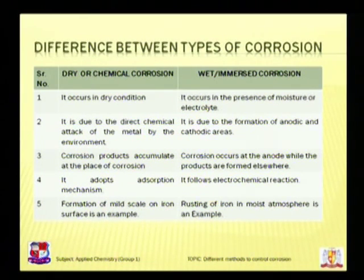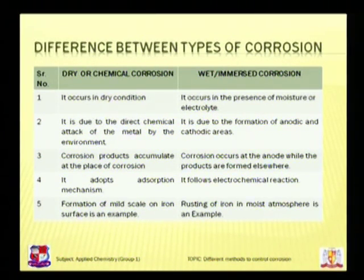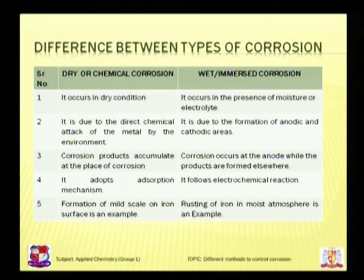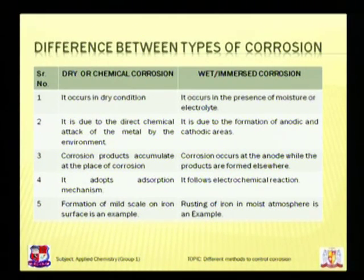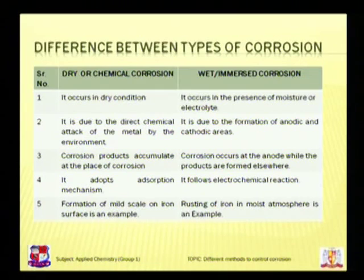We have seen different types of corrosion: one was dry or chemical corrosion and another was wet and immersed corrosion. Dry corrosion occurs in dry conditions, that is in the absence of moisture, whereas wet corrosion occurs in the presence of moisture or any electrolyte medium. Dry corrosion is due to the direct chemical attack of metal by the environment, whereas wet corrosion is due to the formation of anodic and cathodic areas. In dry corrosion, the product accumulates at the place of corrosion and follows an adsorption mechanism, whereas wet corrosion follows electrochemical reactions. Examples include iron surface corrosion in dry conditions and rusting of iron.